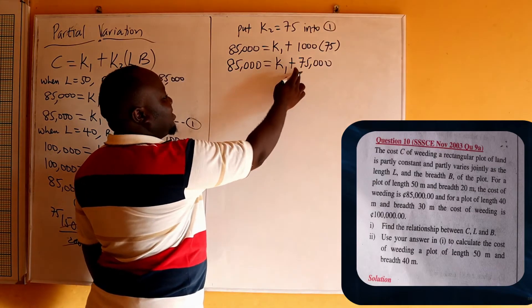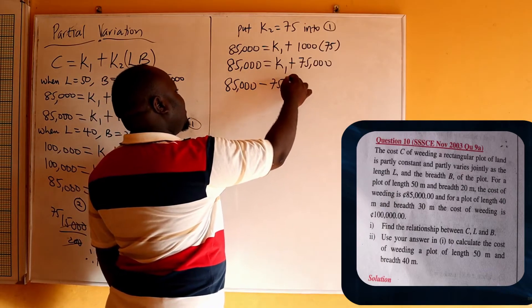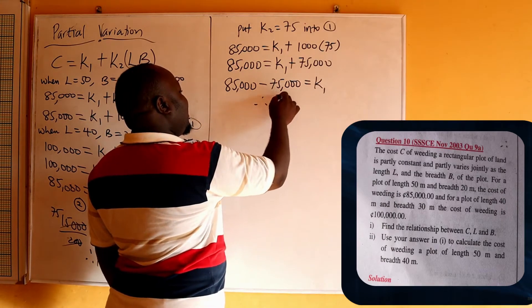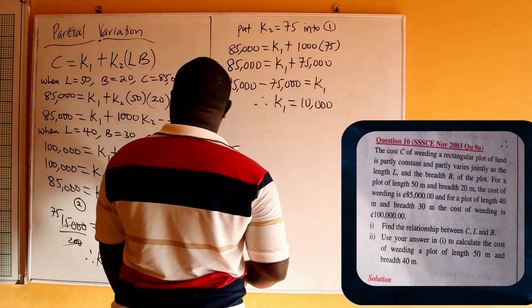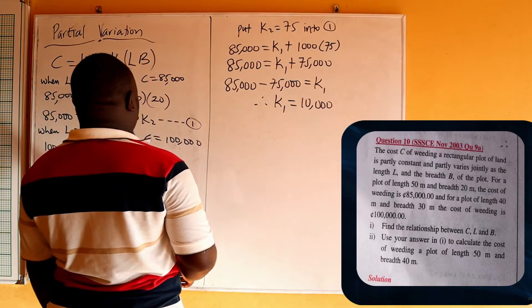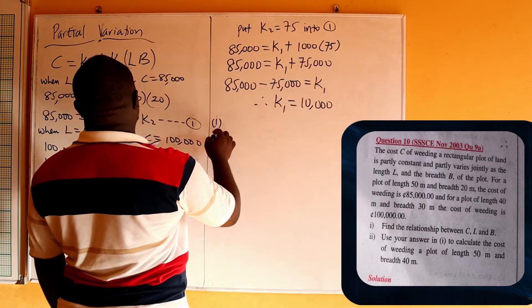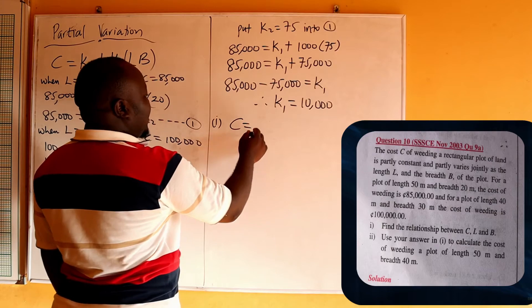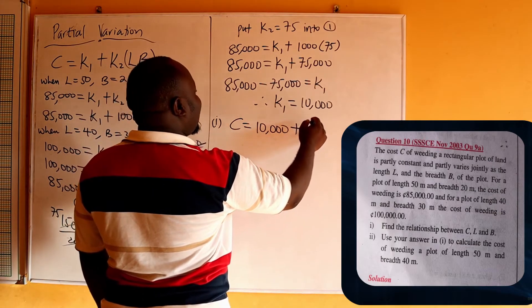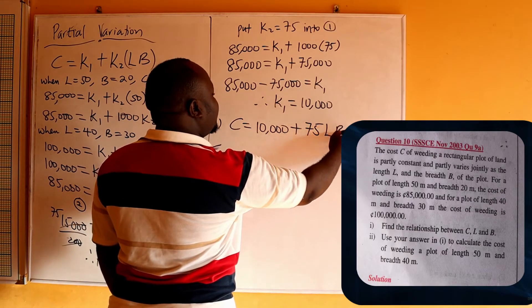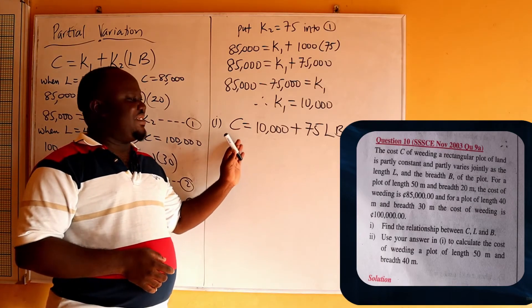Solving for K1, we take 75,000 to the left: 85,000 minus 75,000 = K1. Therefore K1 = 10,000. So the relationship between C, L, and B is C = 10,000 + 75·L·B.